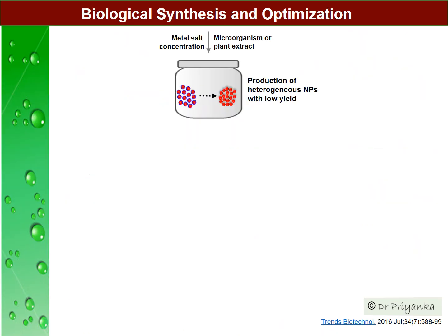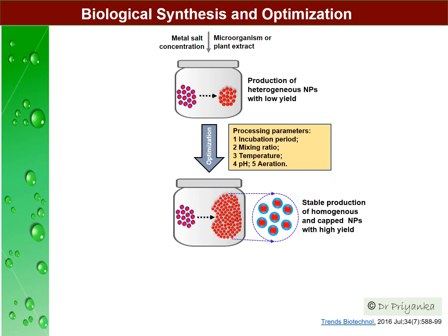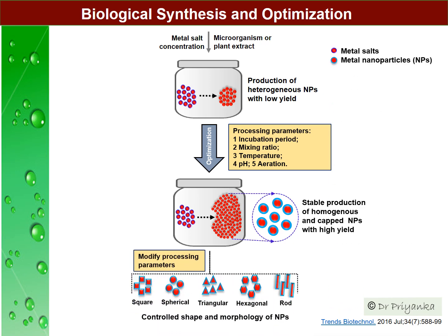So for synthesizing these nanoparticles in a controlled and efficient way, to obtain a well-defined shape and size with very high yield, all you need to do is control their production parameters. These are pH, temperature, aeration, etc. Once you optimize these, you can get specific nanoparticles of your choice with very controlled and desired morphology.